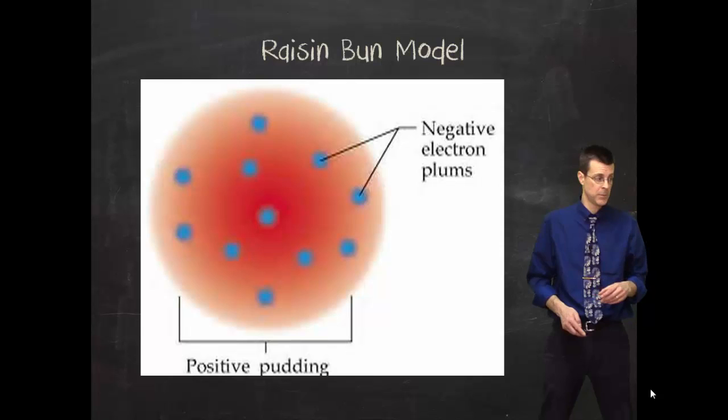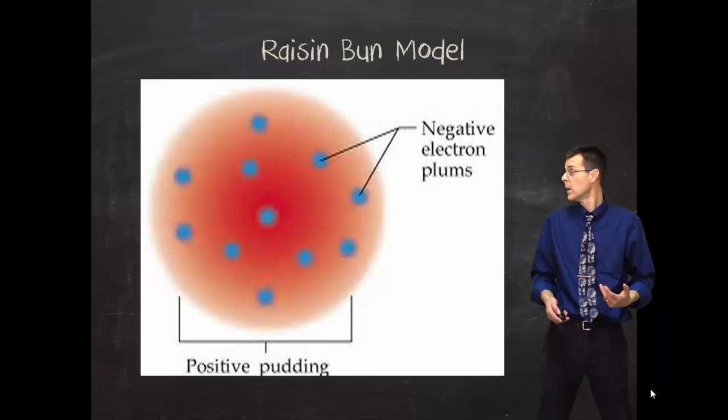So he took those hard indestructible spheres, and he put electrons in them. So now you had to change the model. And you've heard the Raisin-Bun model, or Plum-Pudding model. But you had this sphere of positive charge with the negatively charged electrons in them.